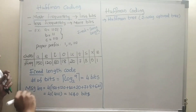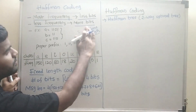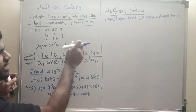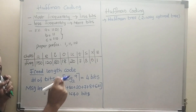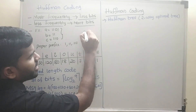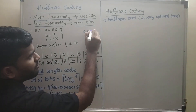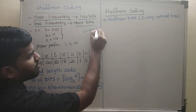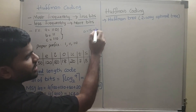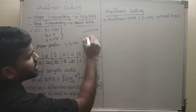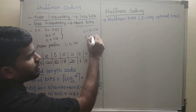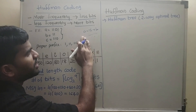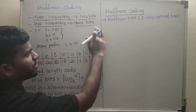In Huffman coding it is different. If A occurs 15 times, A will get a less number of bits to represent. If B occurs only one time, B gets more number of bits to represent.